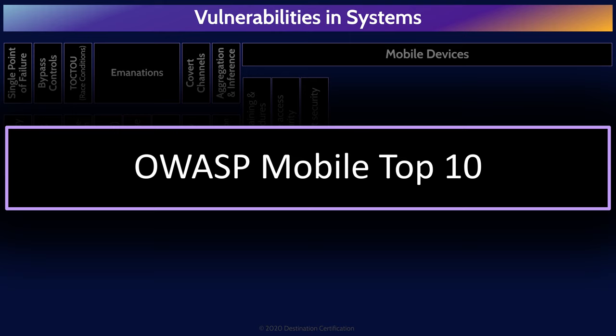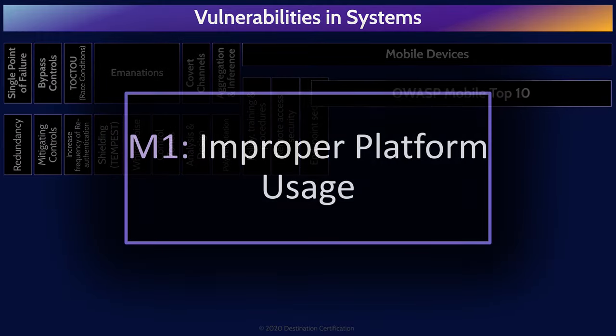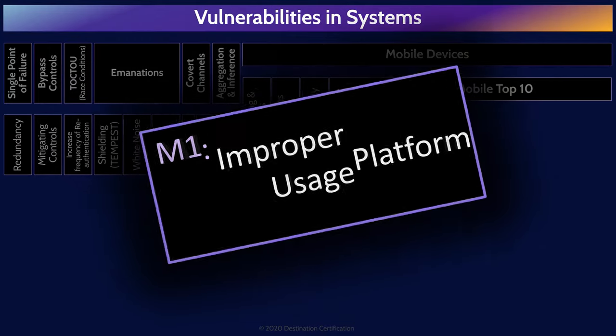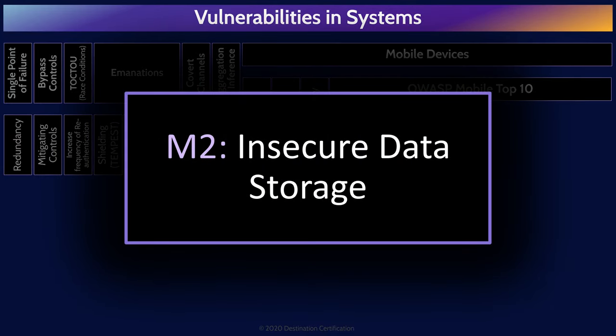As security professionals, we must ensure the following common mobile vulnerabilities are addressed in system design, development, and operation. Improper platform usage means security functionalities built into the mobile device — things like Touch ID, Face ID, and Keychain — are not used or are used incorrectly. To prevent this, use secure coding and configuration management. Insecure data storage means sensitive data such as PII is stored in insecure directories, trivially accessible if an attacker gains physical access or writes malware to copy it out. The best way to avoid this: don't store sensitive data on a mobile device.